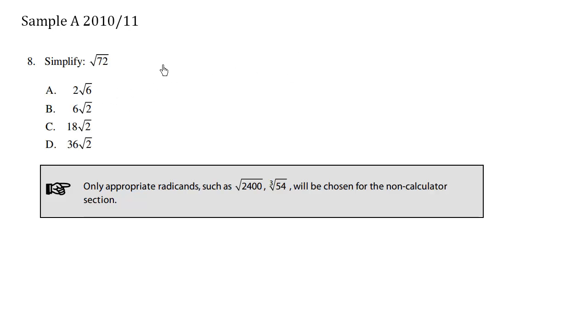Let's simplify the square root of 72. When we have this radical, we can rewrite it by breaking it down into its factors.